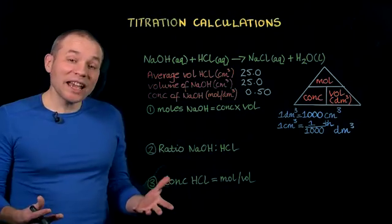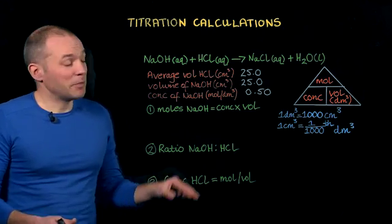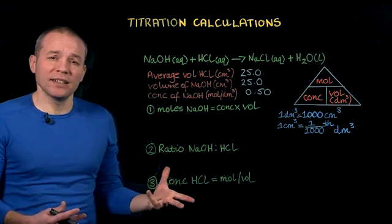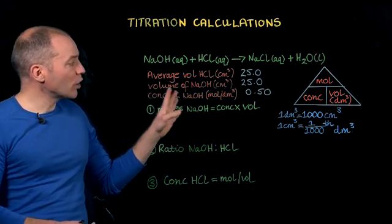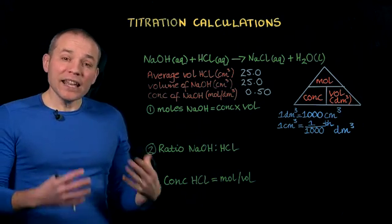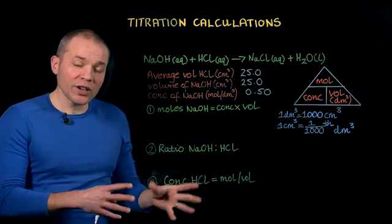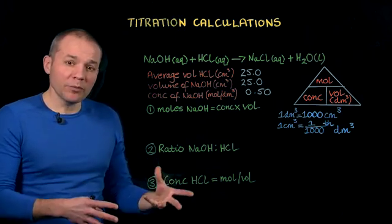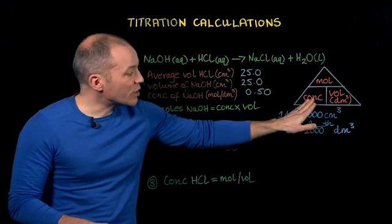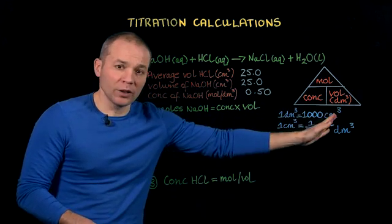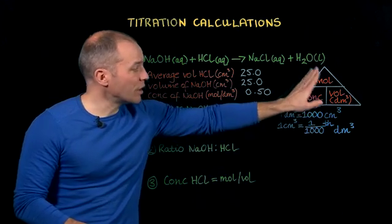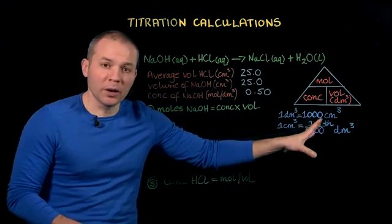We can work out the concentration of the hydrochloric acid because we've measured the volume that we needed to add of the hydrochloric acid, and we know the volume and the concentration of the sodium hydroxide that we were reacting it with. The relationship between concentration, volume, and number of moles is shown in this triangle. The number of moles in a solution is equal to its concentration times its volume, and similarly the concentration of a solution is equal to the number of moles present divided by the volume.